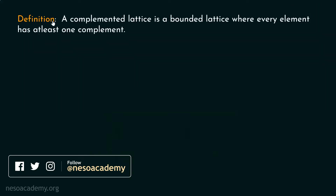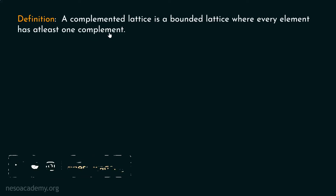Here is the definition: a complemented lattice is a bounded lattice where every element has at least one complement. It is important to understand that a complemented lattice is first of all a bounded lattice, and every element of the complemented lattice has at least one complement.